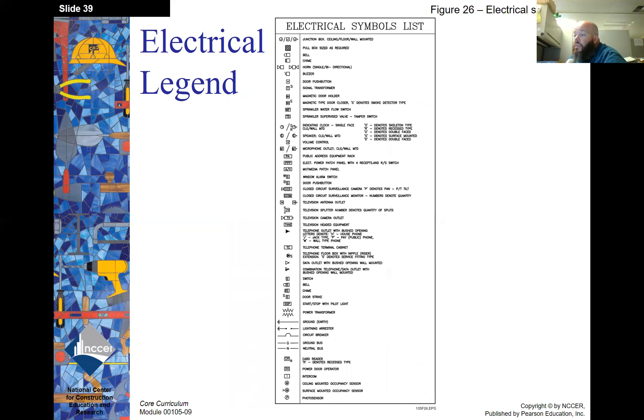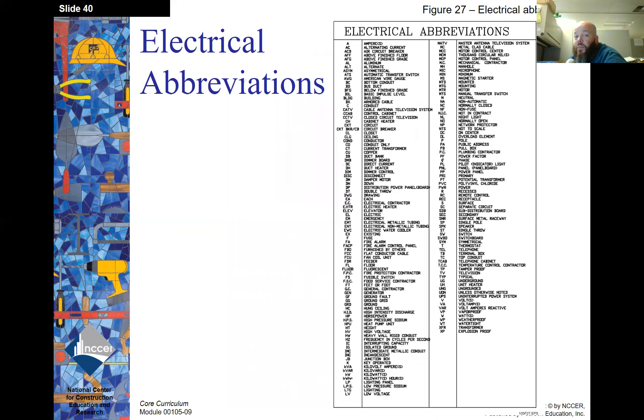Electrical symbol list. Again, it's a legend, guys. We've seen this one before. This is just showing you what different shapes, different things mean. Electrical abbreviation. Same thing. We went over this. Abbreviations are made so that it saves space while you're writing any kind of description. So you're doing it with an abbreviation so you don't clutter the drawing up.